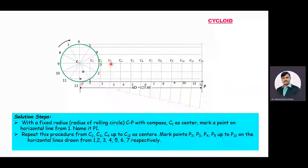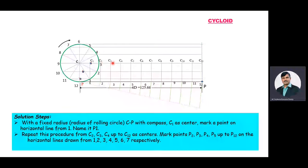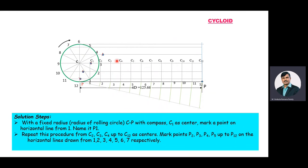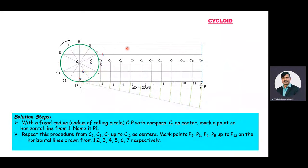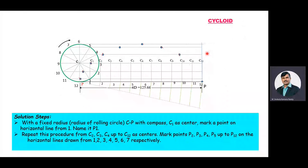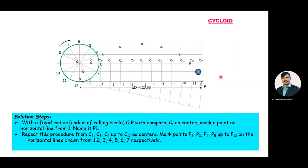With C3 as center and rolling circle radius, draw an arc on the horizontal line passing through the third division point on the rolling circle, naming this point P3. Then with C4 as center and CP as radius, draw an arc on the horizontal line passing through the fourth division — name this point P4. Similarly, repeat the procedure to get points P5, P6, P7, P8, P9, P10, P11, and P12.